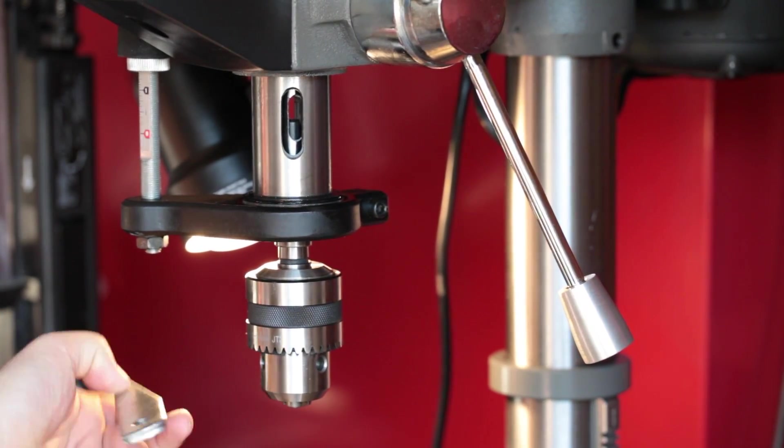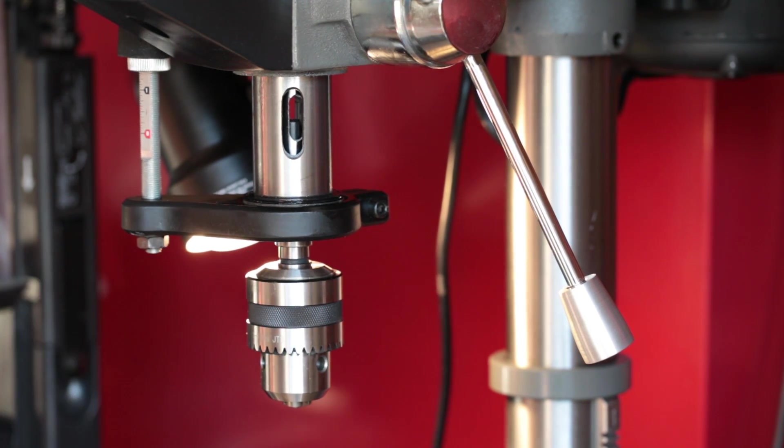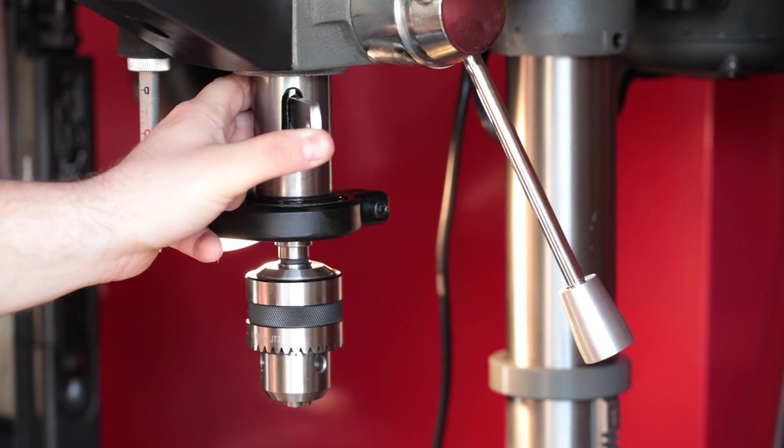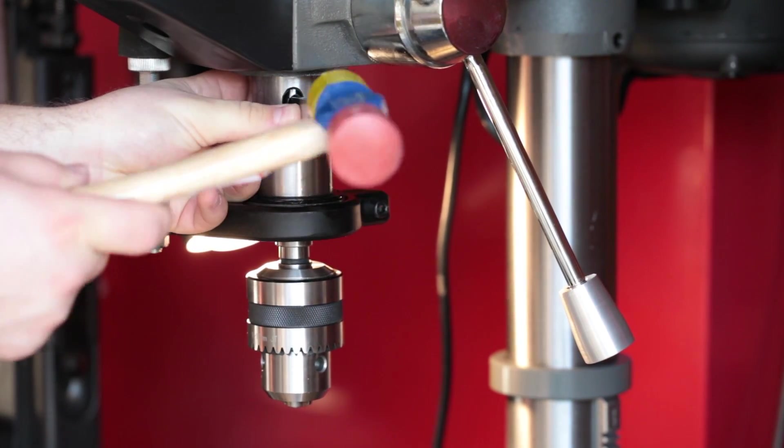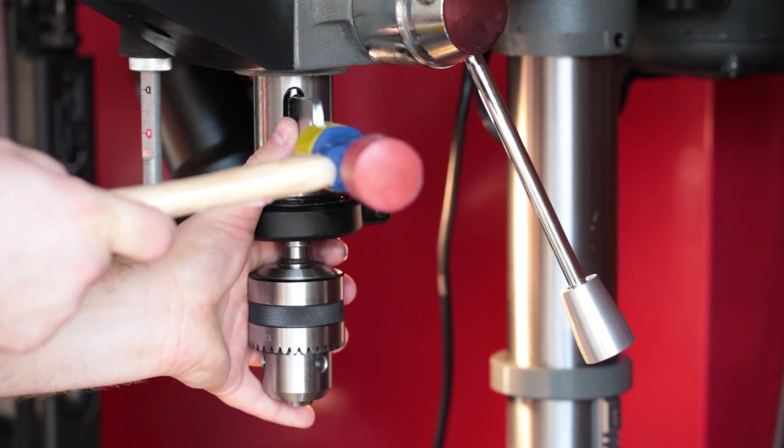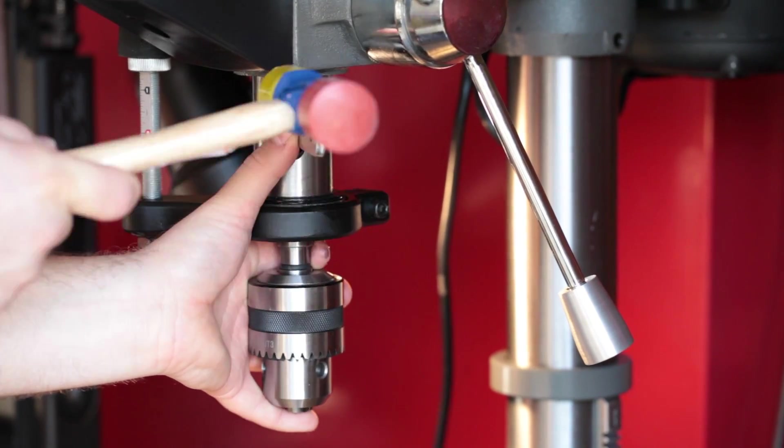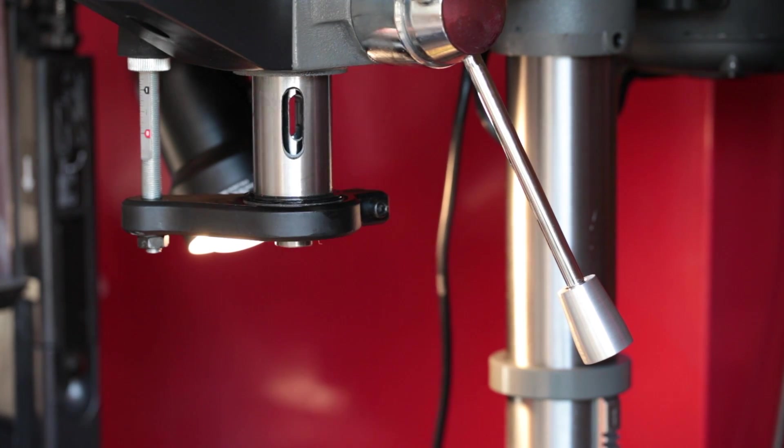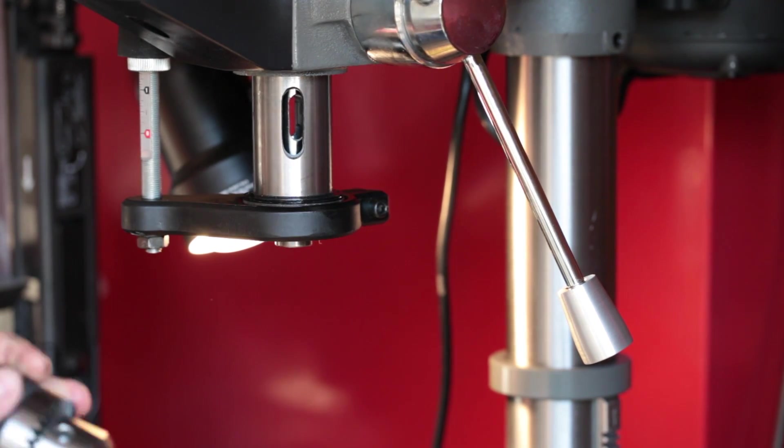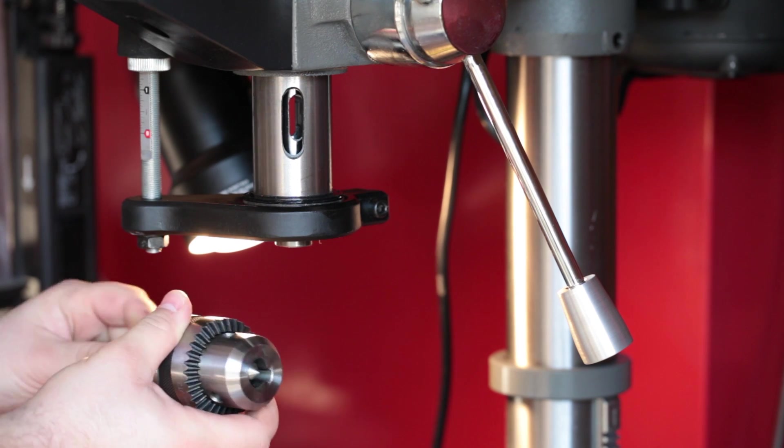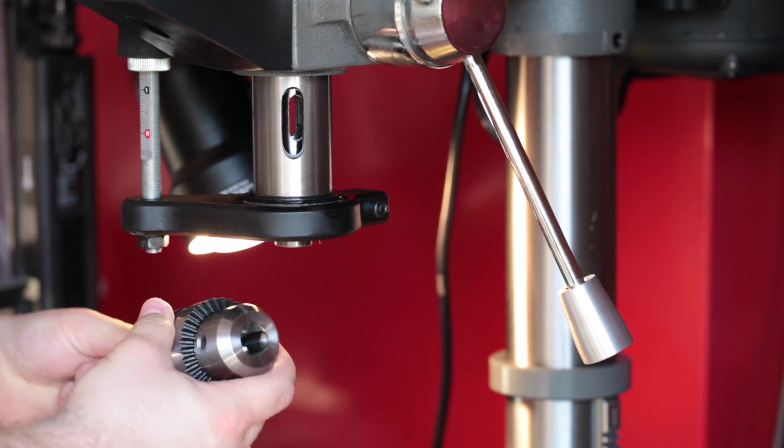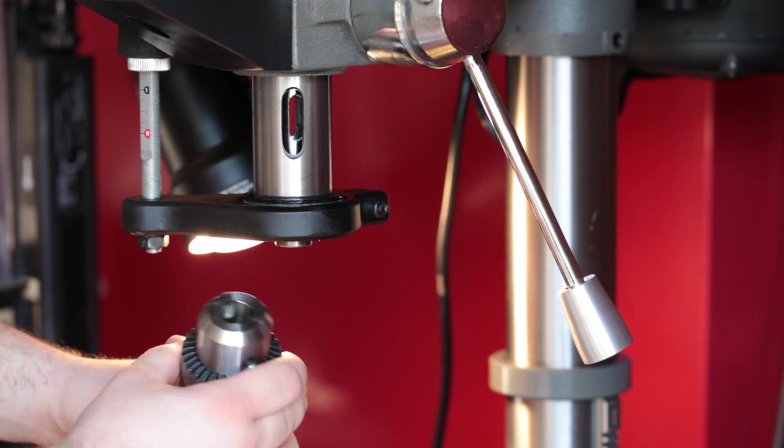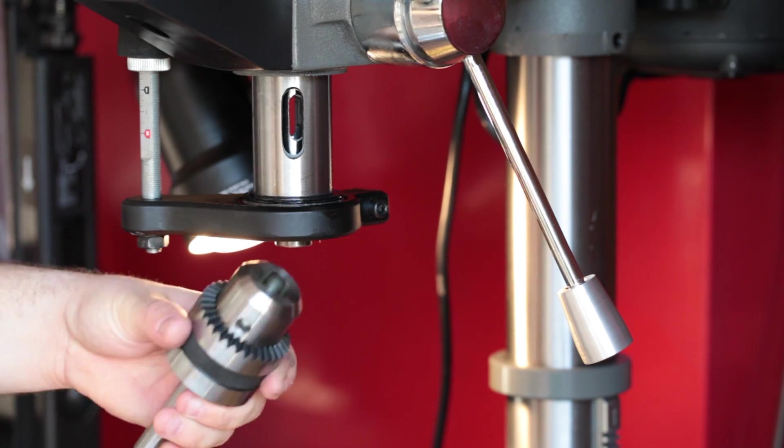So what I'm doing here is I have my new arbor adapter provided by McMaster Carr. It's a number two Morse taper to a number three Jacobs taper. And I'm just going to go ahead and use this wedge piece here to drive it through. And it drops the spindle right out. So I'm going to go ahead and separate the chuck from the arbor adapter. I use a press to do that so that everything goes nice and smoothly. You could hammer it out but you end up denting the arbor end up.